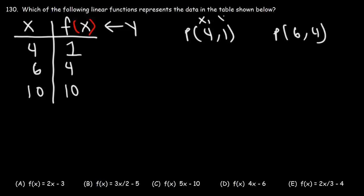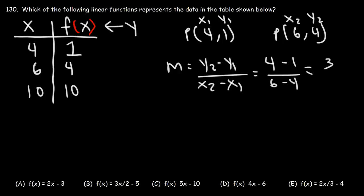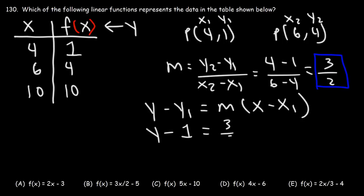We're going to say this is our x1 value, this is y1, this is x2 and y2. Our next step is to calculate the slope using this formula. So this is going to be 4 minus 1 over 6 minus 4. 4 minus 1 is 3, 6 minus 4 is 2. Now that we have the slope, we could use the point-slope formula to get the function.